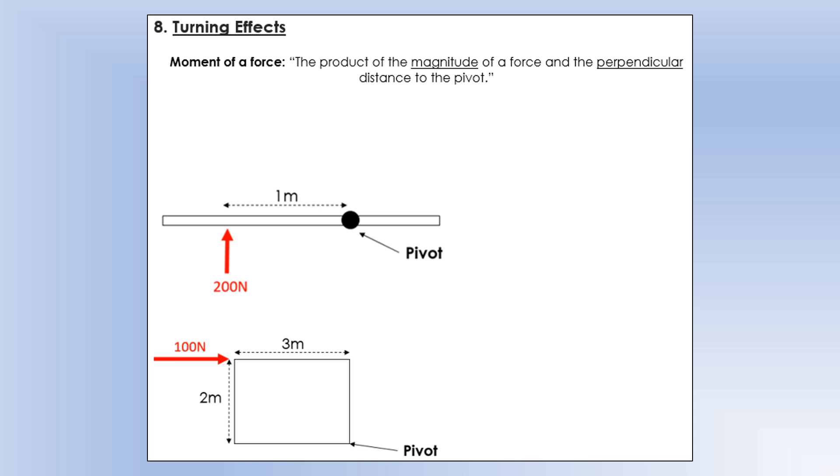And the turning effect of a force is what we call a moment of a force. And we can calculate it by multiplying or getting the product of the magnitude of the force and the perpendicular distance to the pivot. So to show you a few examples of this, we've got a pivot marked in black, and the magnitude of the force we can see there is 200, and the perpendicular distance between the pivot and the force is 1m. So hopefully you can see fairly simply the moment of the 200 newton force is going to be 200 newton meters.